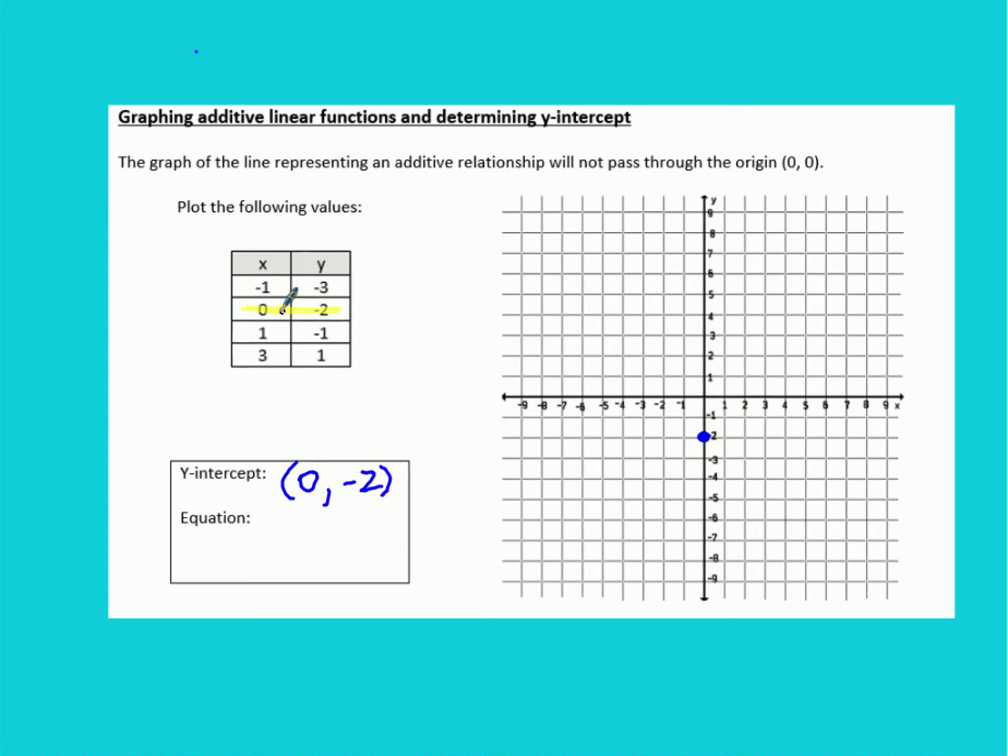Now we can go through and plot the rest of these points. Negative 1, negative 3 is going to be right here. 1, negative 1 is going to be right here. And 3, 1 will be here. And then you just want to carefully graph that line by drawing a line through those points as best you can and make it straight.